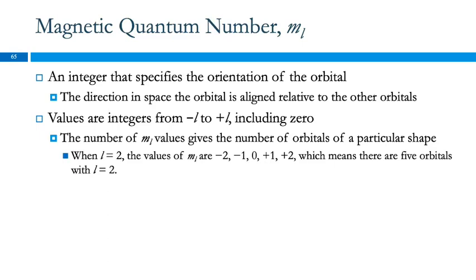The magnetic quantum number gives the orientation of the orbital — how the orbital is aligned in space relative to the other orbitals. Here we can have negative values: they can go from minus l to plus l, including 0. The number of different m sub l values tells us how many orbitals there are with that particular shape. So if l equals 2, m sub l can go from minus 2 all the way up to plus 2, including all the integers in between, including 0.